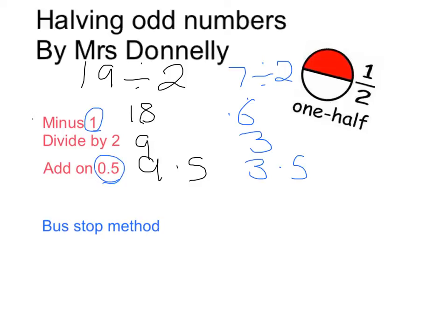If it's a larger number, something like 175, and you've got to find half of it, you can always use your bus stop method to divide it by 2.